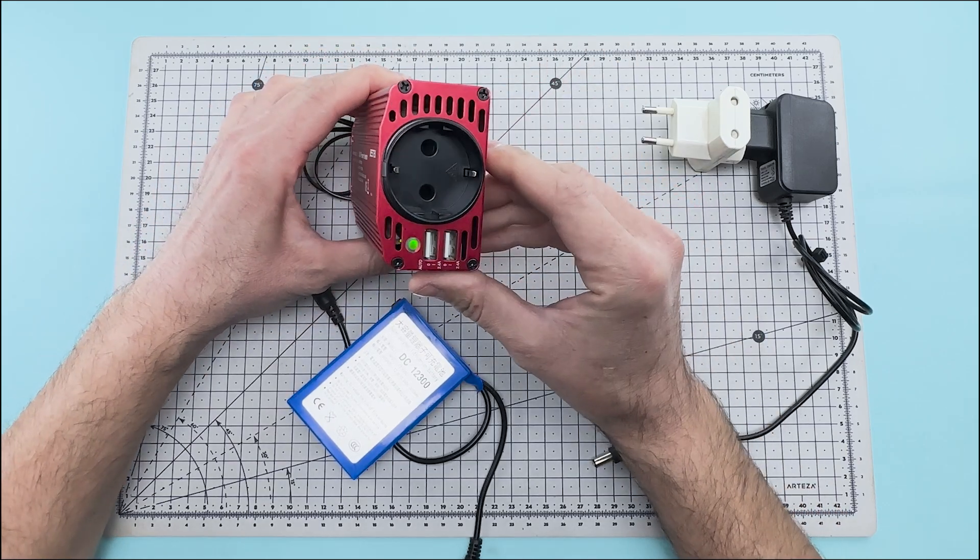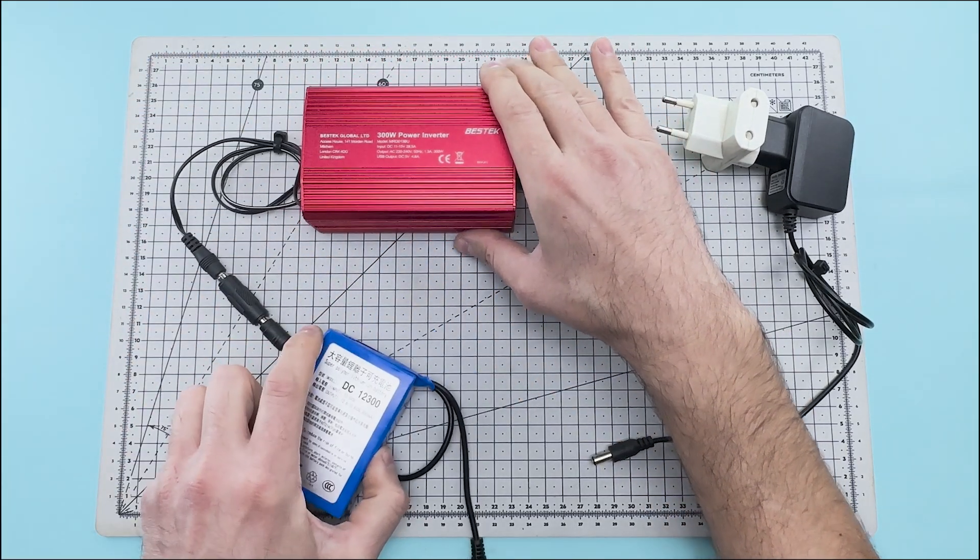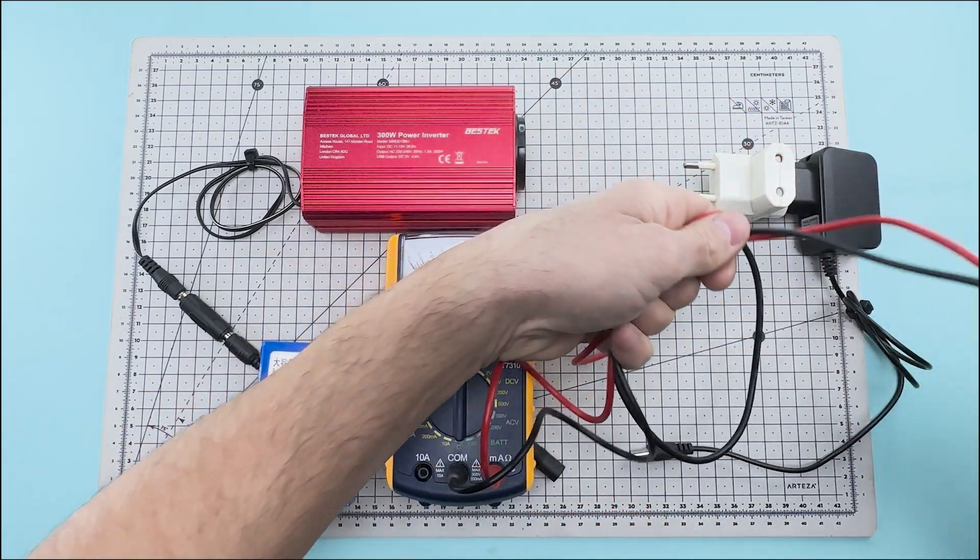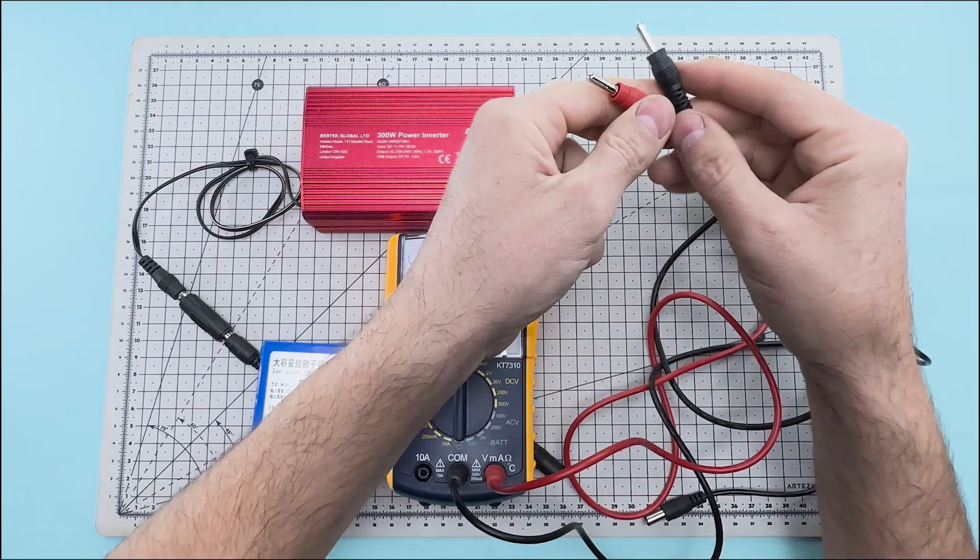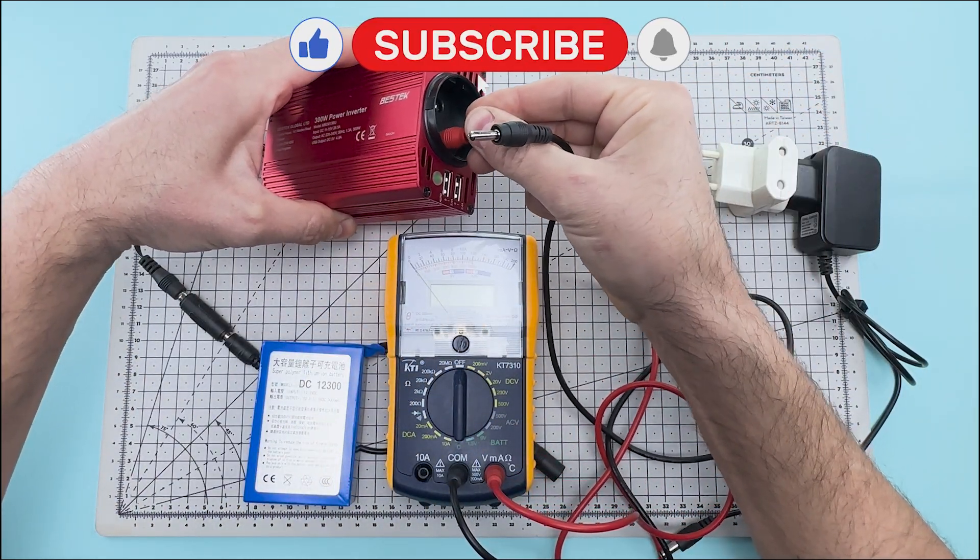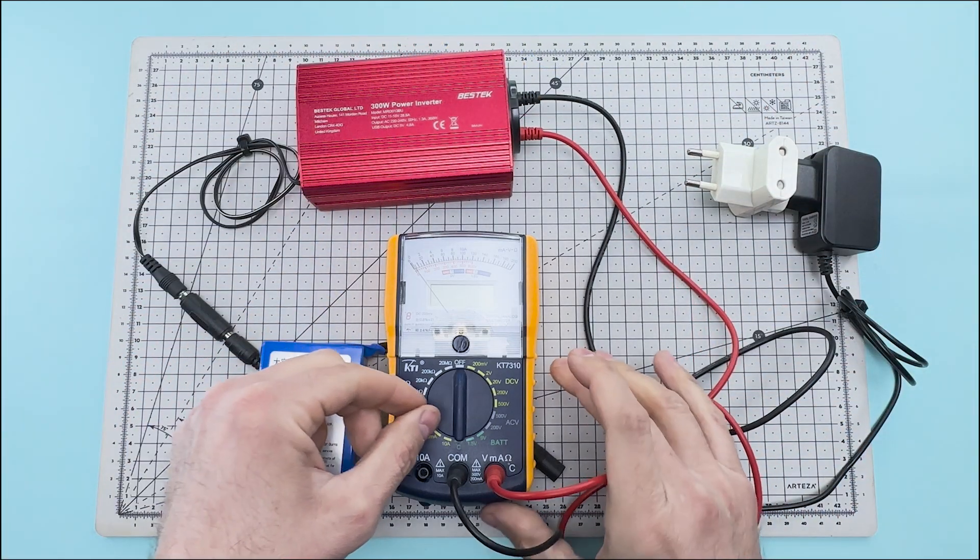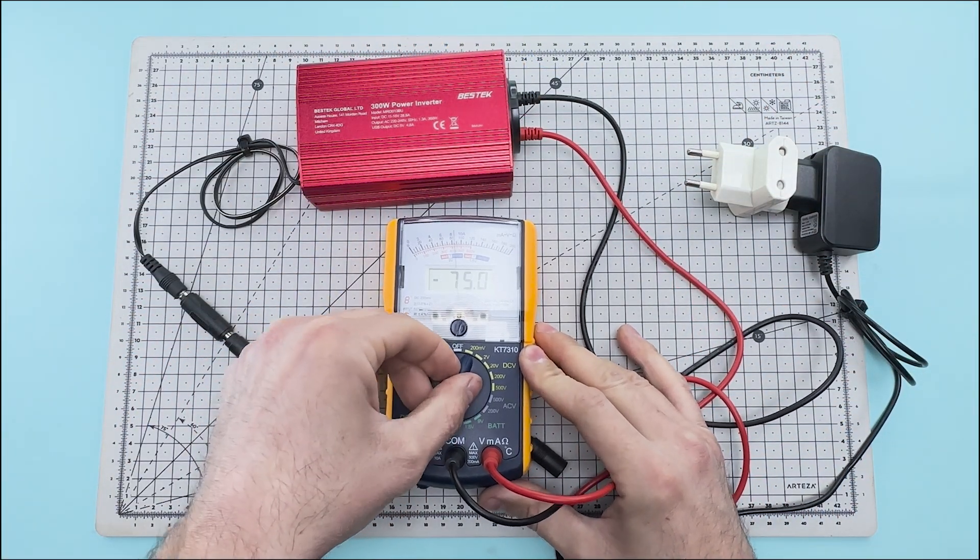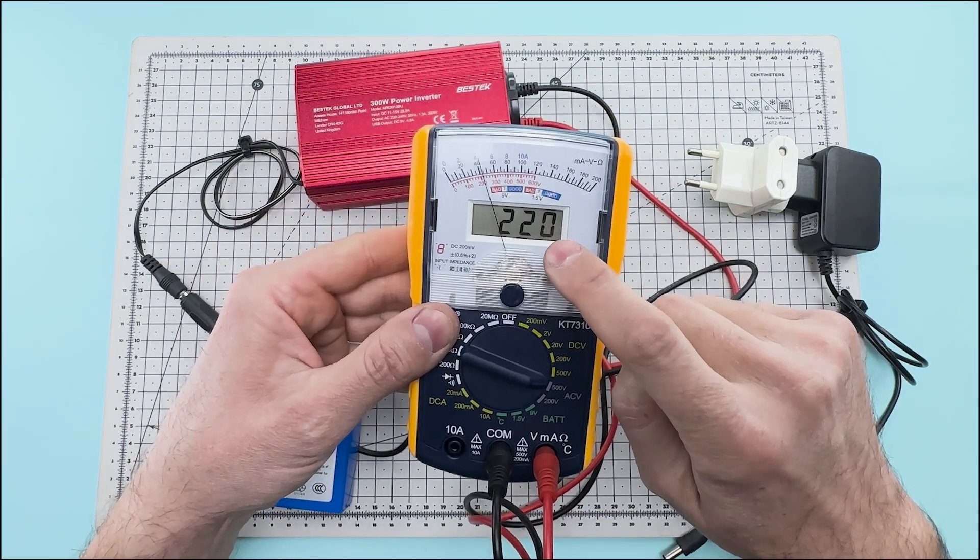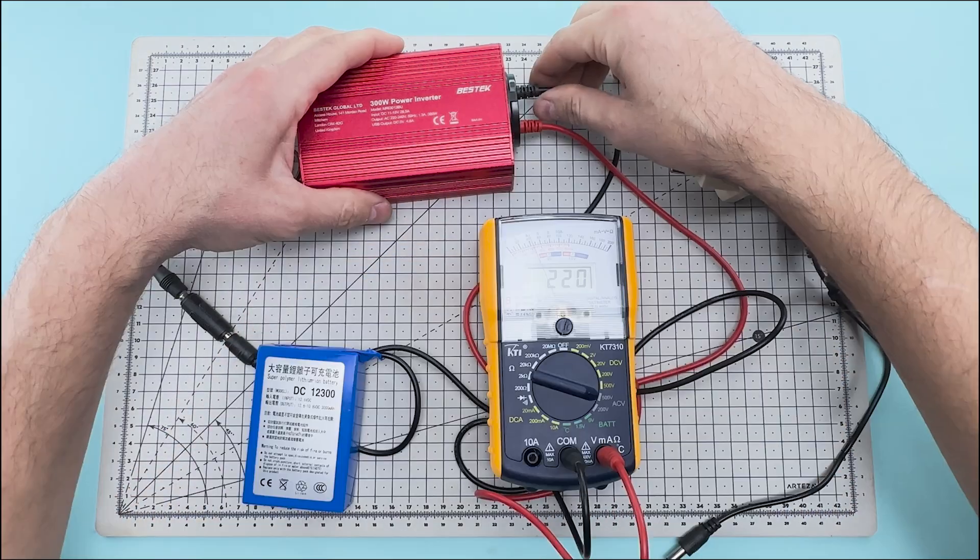Now the power inverter will transform the voltage from the lithium battery. We are going to use a voltmeter to measure the output voltage of the power inverter. You can see that we have an output of 220 volts of alternating current.